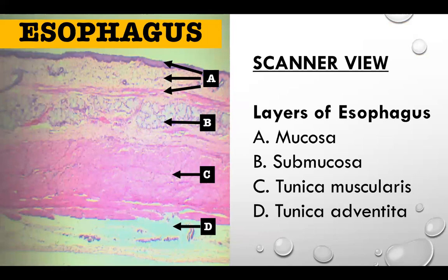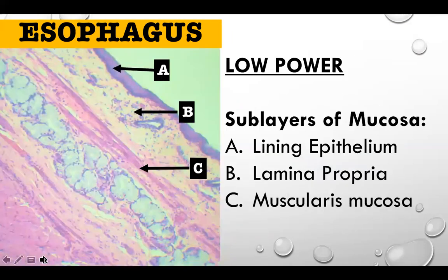Let's start with the esophagus. In the scanner view, letter A is the mucosa, B is the submucosa, C is the tunica muscularis, and D is the tunica adventitia. At low-power magnification, we can see the three sub-layers of the mucosa of the esophagus.